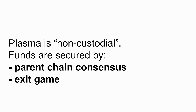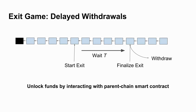Because the operator is untrusted, you need to add some additional things. In our Plasma construction, we say it's non-custodial in the sense that you're as secure as your parent chain consensus is, but you need to introduce an exit game. This exit game is the process by which you take your funds out. Instead of having an instant withdrawal, you allow for a dispute period: you start an exit, wait some time period, then finalize the exit and withdraw.